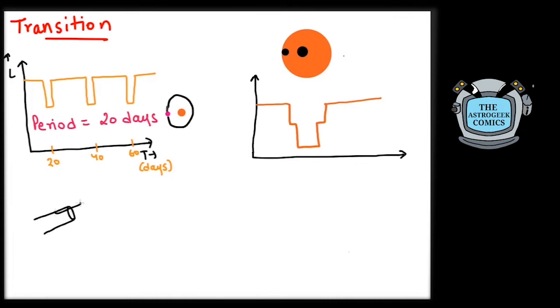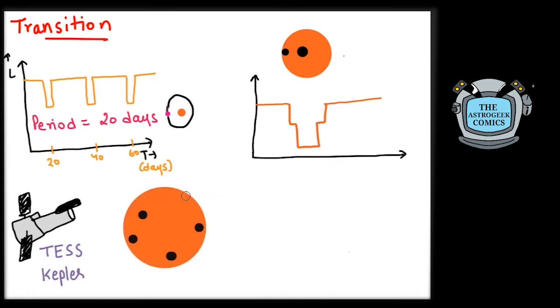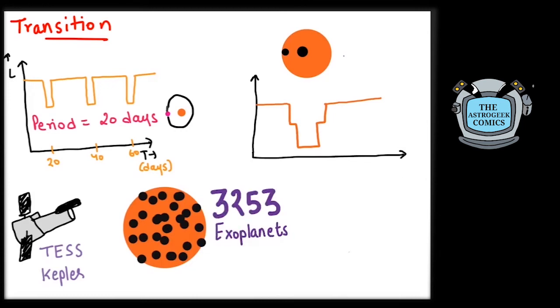This method of hunting exoplanets has been the most successful and is used by TESS space telescope and also used by the Kepler mission. Till date, we have discovered 3,253 exoplanets using transits.